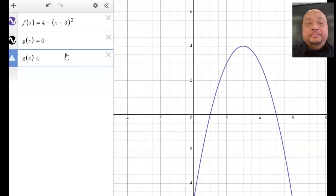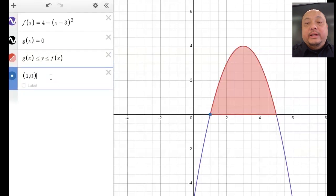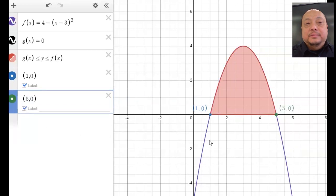Here's the region between them. The intersections are here and here. This point is (1, 0). This point is (5, 0).